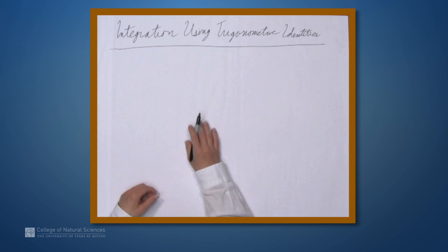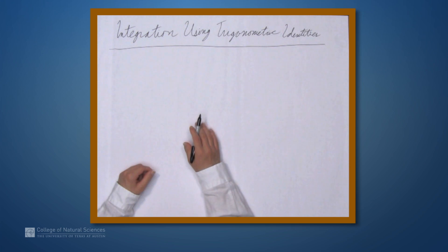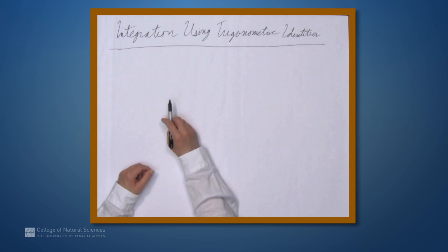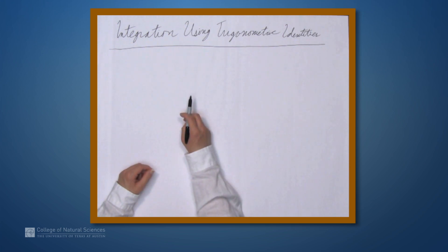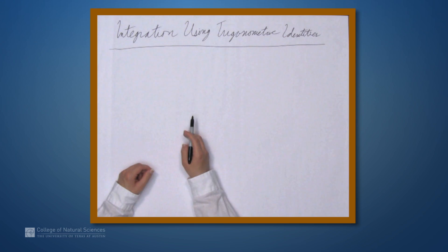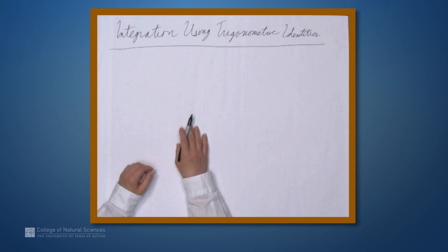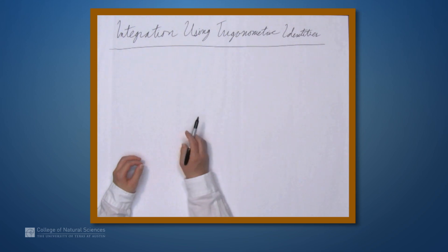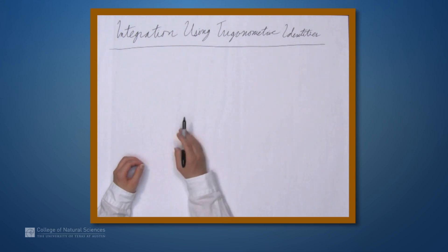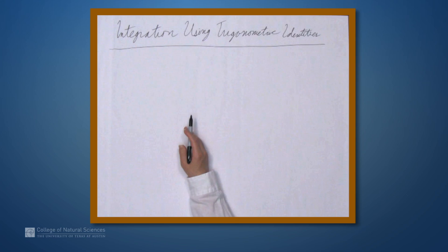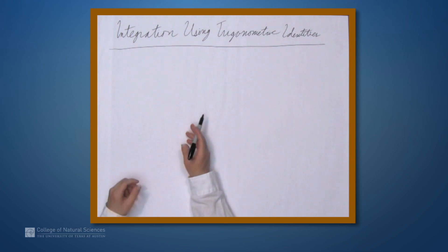We're here at the example table, and in this video we're going to look at examples of integration using trigonometric identities. We have two basic strategies. If we're given an integral with trig functions, we want to try to rewrite a product as a sum, if possible, or rewrite it so that we can make a useful substitution.